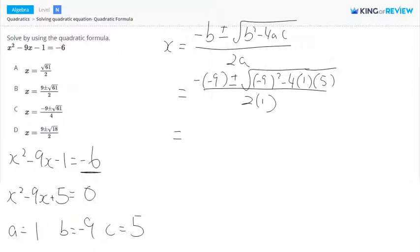That equals negative minus 9, so that's 9 plus or minus square root of 81, negative 4 times 1, which is negative 4 times 5, which is negative 20, over 2.